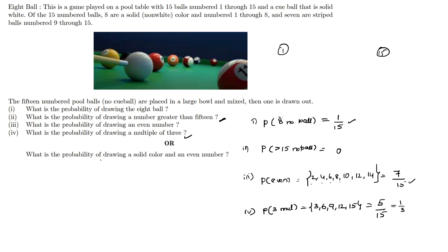Next: what is the probability of drawing a solid color and an even number? Solid color balls are numbered 1 through 8. The even numbers among those are: 2, 4, 6, 8 — that is 4 balls. So, the probability of drawing a solid color and an even number is 4/15.